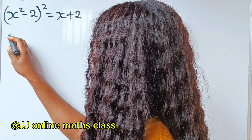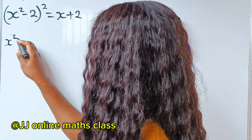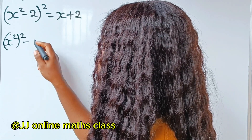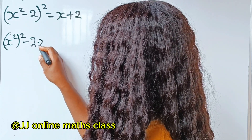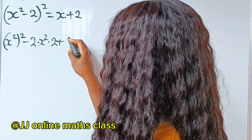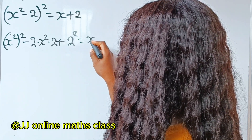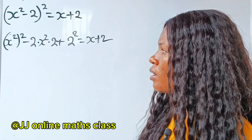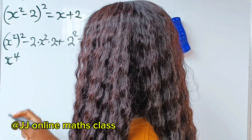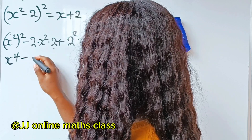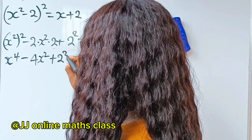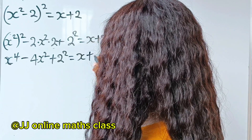So this is equal to a squared, that is x squared squared, minus 2ab — that is 2 multiplied by x squared multiplied by 2 — plus b squared, that is 2 squared, is equal to x plus 2. So we have x to the power of 4, minus 4x squared, plus 2 squared is equal to x plus 2.